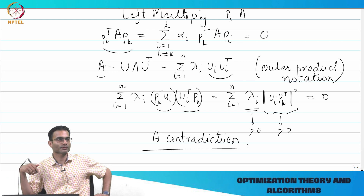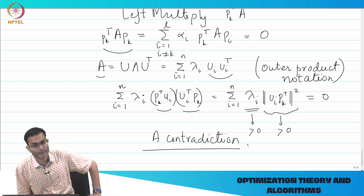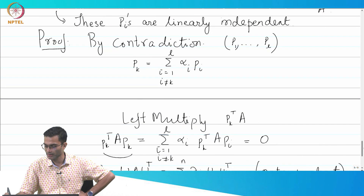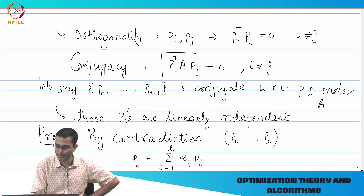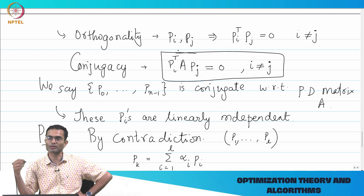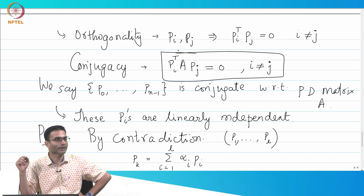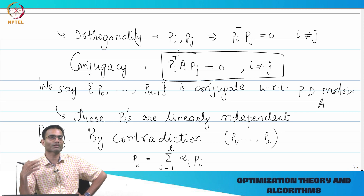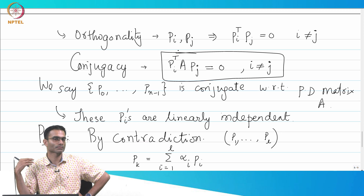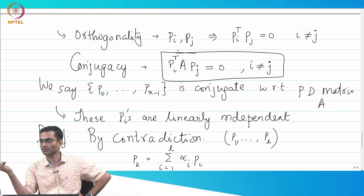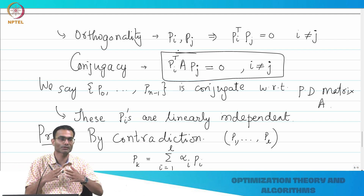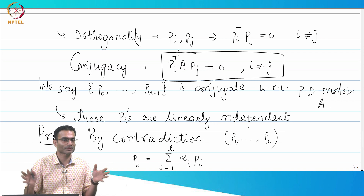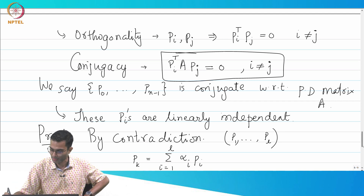Any questions on this? Everything we have done so far has been simple linear algebra starting with eigenvalue decomposition. What we have proven is an interesting result: if you give the conjugacy condition, the P's are going to be linearly independent. Have you encountered any other way of generating linearly independent vectors? Gram-Schmidt is one process — it actually went further and made them orthogonal. Here, given an input matrix A, there exist n linearly independent vectors satisfying this conjugacy property.